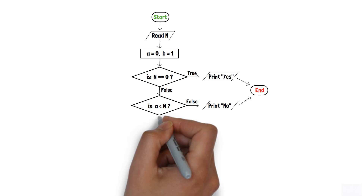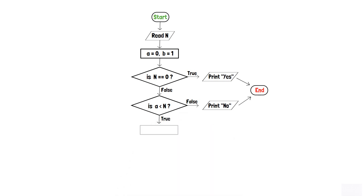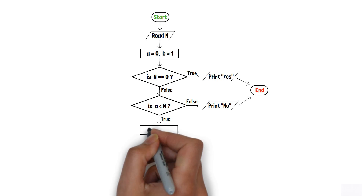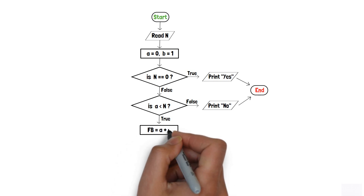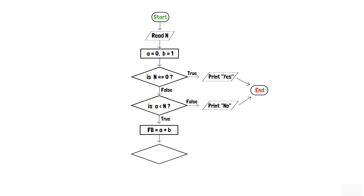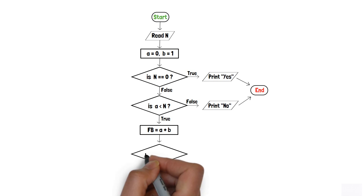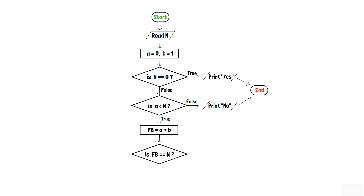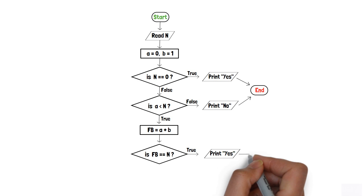But if a is less than n, we add a process box that creates a new variable fb and assigns it the summation of a and b — that is, fb equals a plus b. We then implement another decision box to determine whether fb is equal to n or not. If fb equals n, that means n is present in the Fibonacci sequence, so we print yes using an output component and end the program.